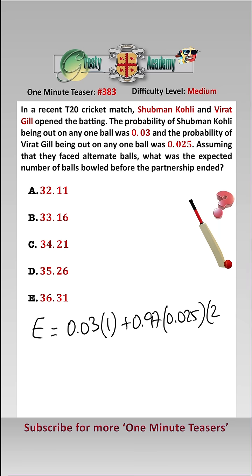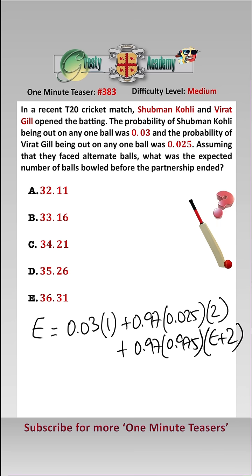And that means there would be two balls. Add 0.97 times 0.975 times E plus 2, which is the probability that neither of them are out on the first two balls. And then basically we're just using recursion here. Sorting this out,